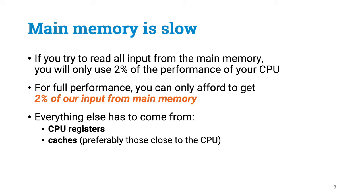So if you do lots of additions, and all of your input comes from the main memory, you can only use roughly 2% of the performance of your CPU. The CPU could consume data 50 times faster than what you are giving it. Or put another way, if you want to get the full arithmetic performance, only 2% of the input can come from the main memory. All other operands have to come from either CPU registers or some cache memory that is closer to the CPU.